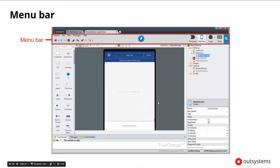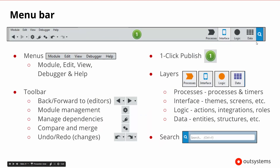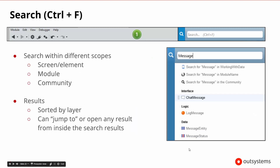If we look at the menu bar, starting on the right-hand side, you can see there are different types of layers and different types of pieces. There are menus, toolbar icons that let us go back and forth or manage different resources, a one-click publish button in the middle, and layer icons that show us if we're working in the processes, user interfaces, logic, or data areas. To the far right there is a search capability. The menu bar gets us to most of the things we're typically going to need.